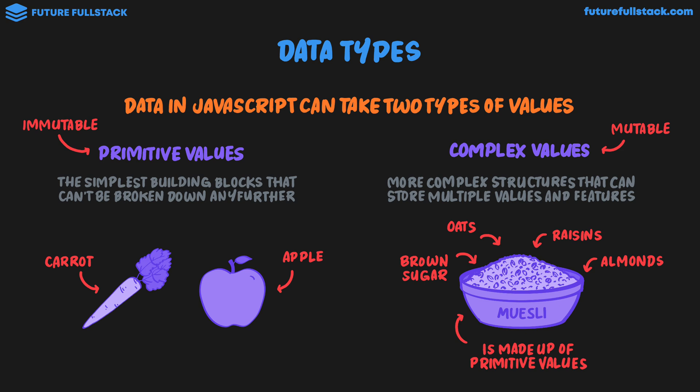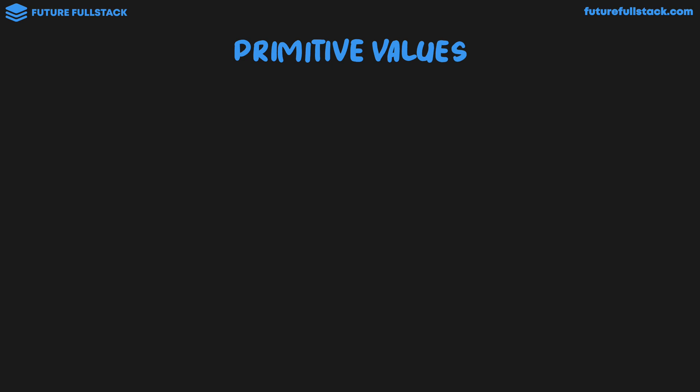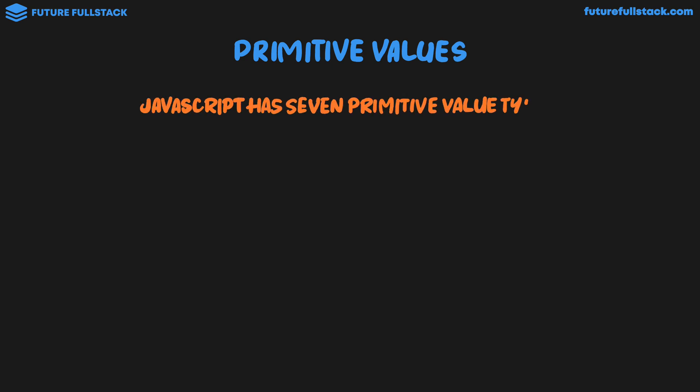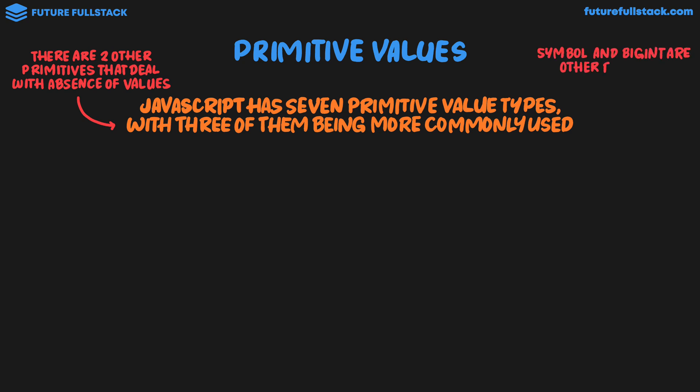Primitive values and complex values are the two categories of values in JavaScript. We'll talk a lot about complex values later in the course, but to start off we need to focus on primitive values. JavaScript has seven primitive value types, with three being most commonly used. Two others deal with the absence of values, and two more — symbol and bigint — are not often used. So let's look in more detail at the three most commonly used primitive values.